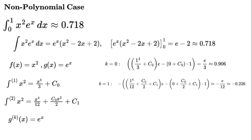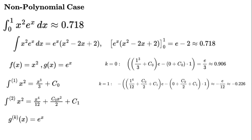The series keeps going because e to the power of x's derivatives never stop, and it often converges to the wrong value — like 0.3587 in my tests. Our formula loves polynomials where g's derivatives become 0, but non-polynomials like e to the power of x can trip it up.